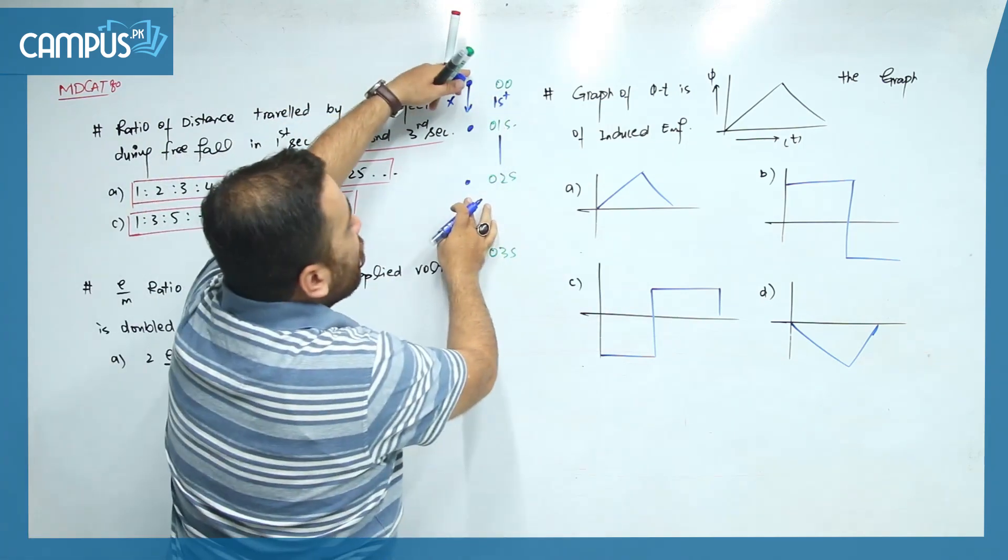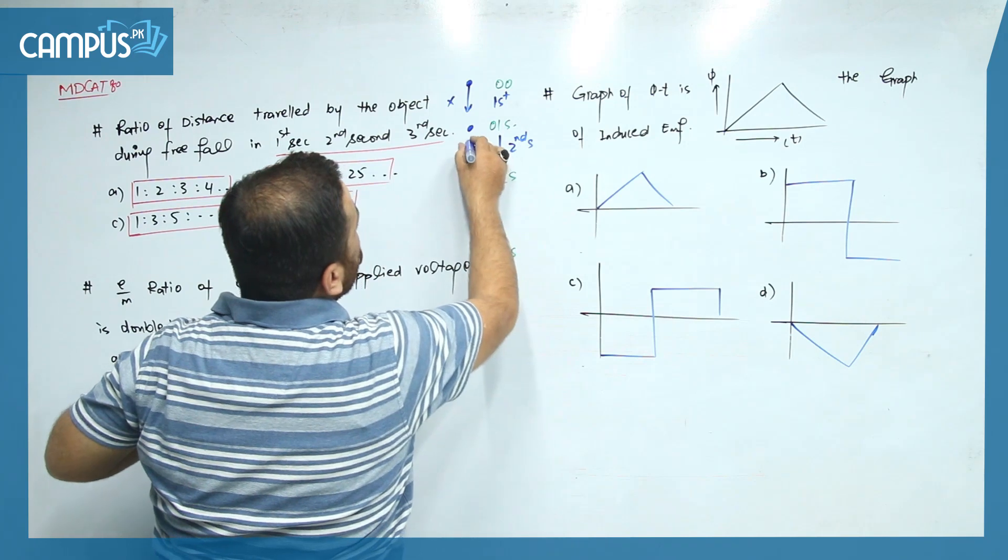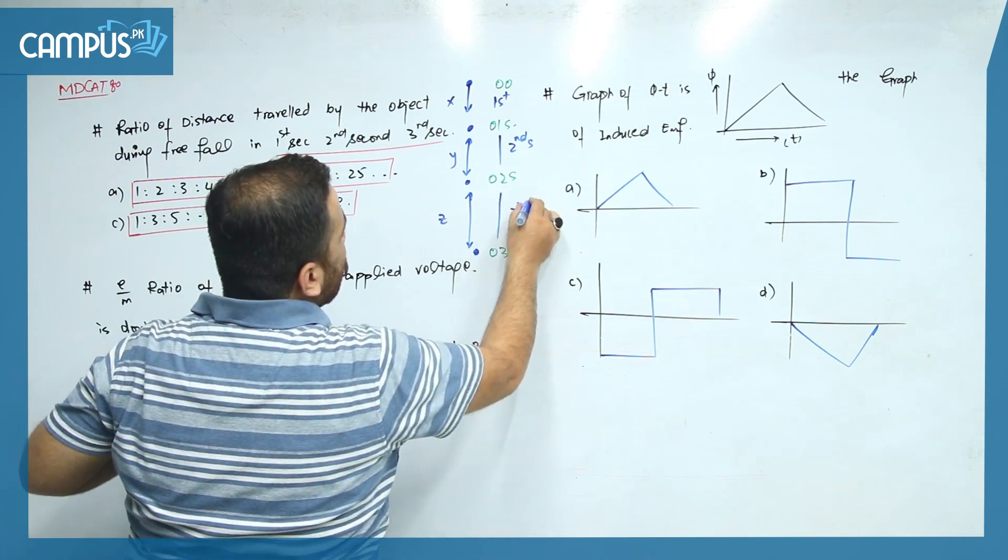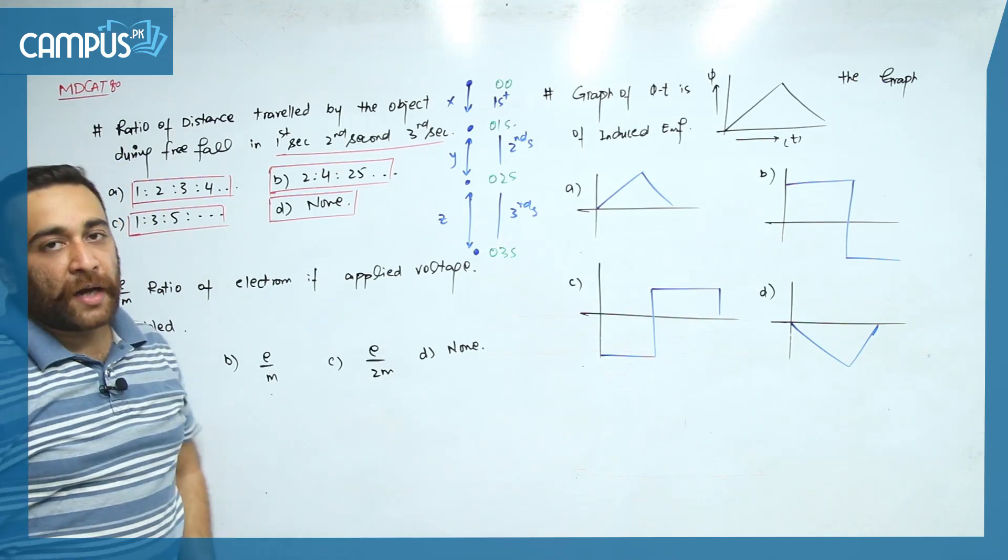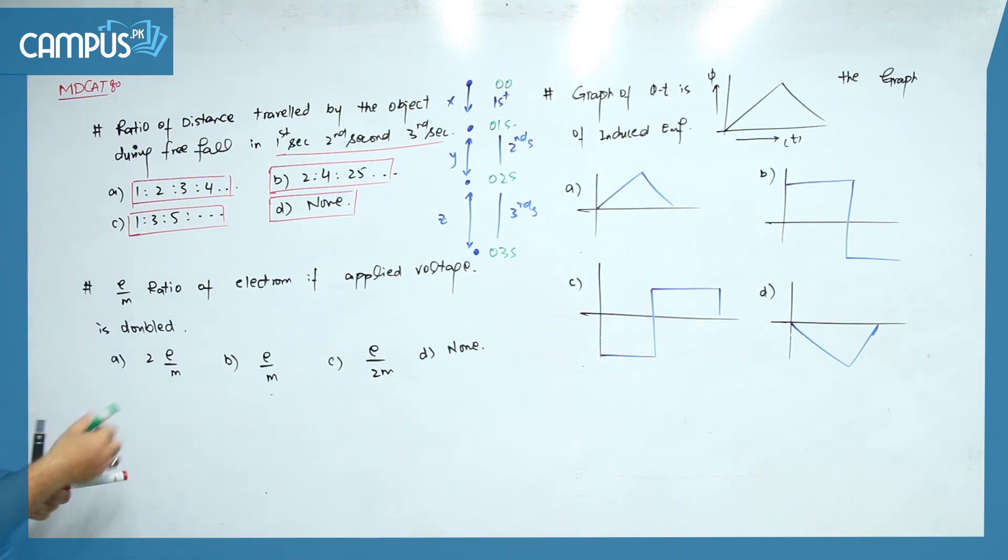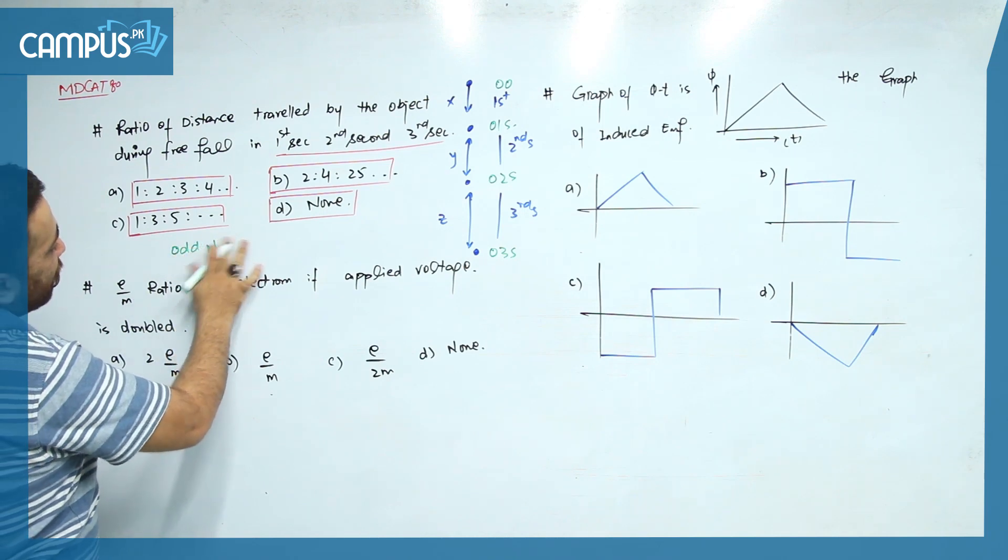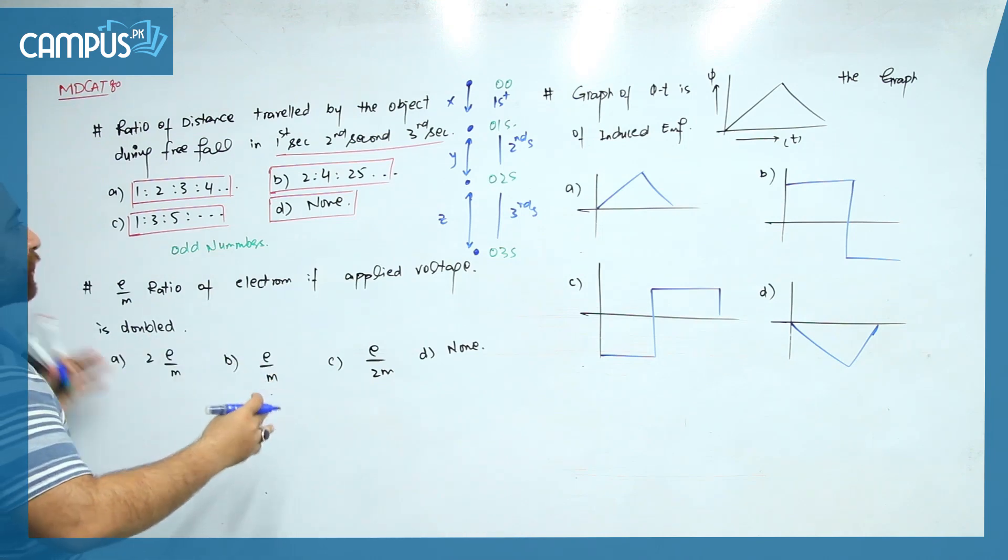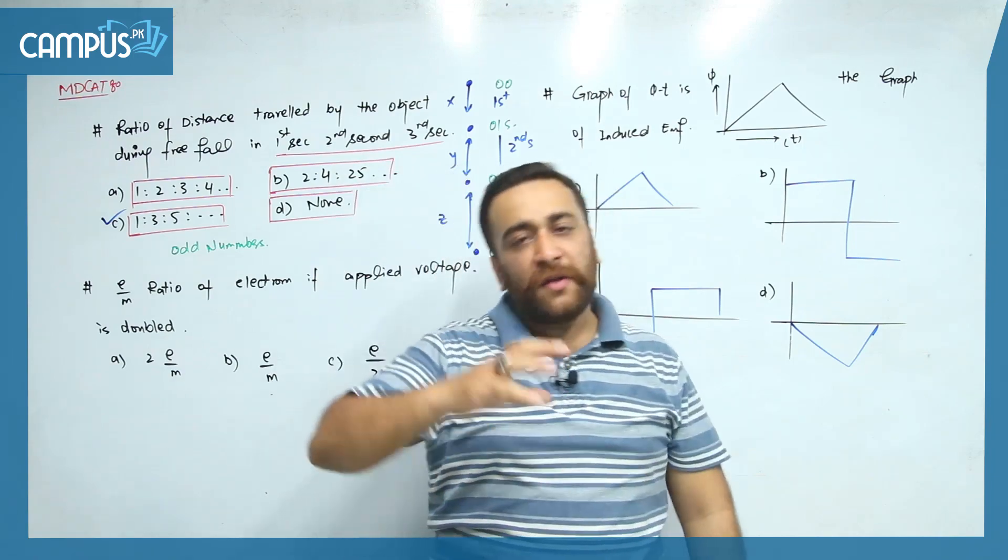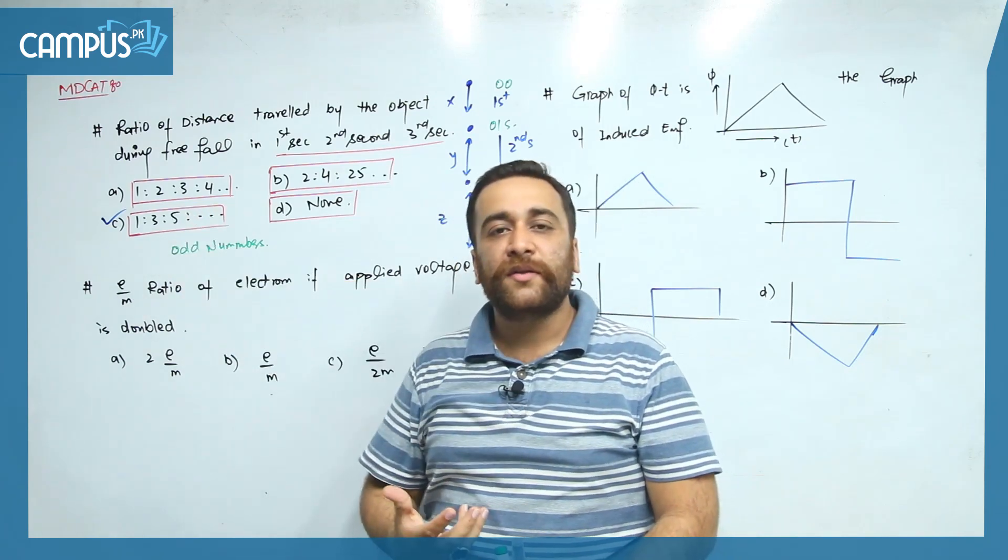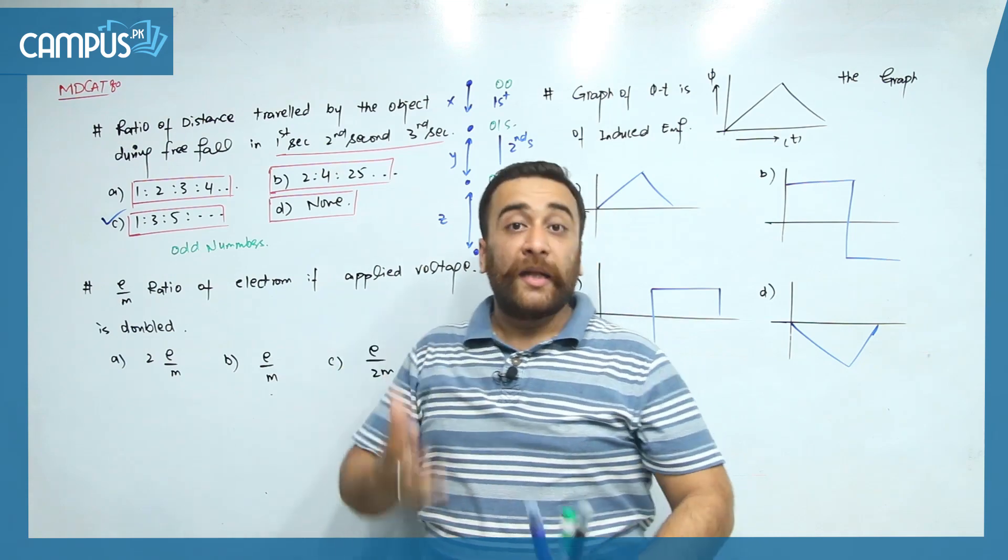What is being asked is the ratio of distance traveled during first second is X, in the second second is Y, and in the third second is Z. The answer is odd numbers - odd numbers ratio is 1:3:5. So you can see a very simple tricky method to solve tricky questions. Once you digest the question in your mind, you will easily handle this type of question.